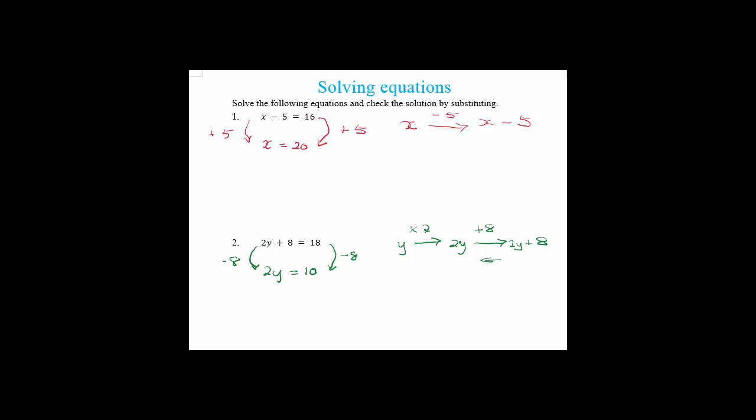And then what was the next thing I did? Instead of timesing by 2, I have to divide by 2. So let's divide by 2, as we're doing the opposite, dividing by 2, and we get y equals 5.